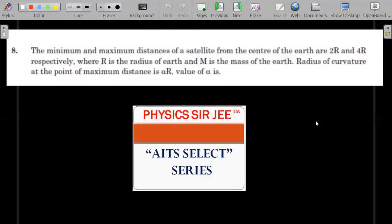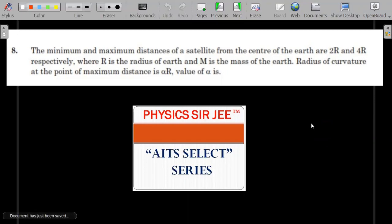So without much further ado let me go ahead with the problem statements. This is the first one. The minimum and maximum distances of a satellite from the center of earth are 2r and 4r respectively where r is the radius of earth and m is the mass of earth. Right, radius of curvature at the point of maximum distance is alpha r. This is the question.